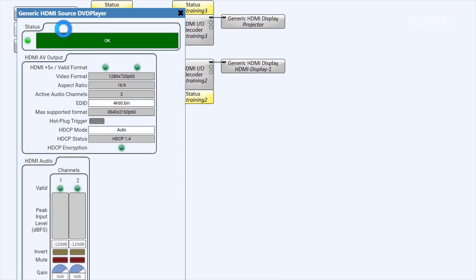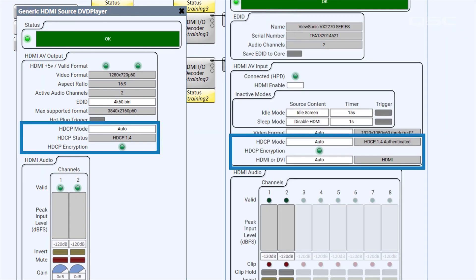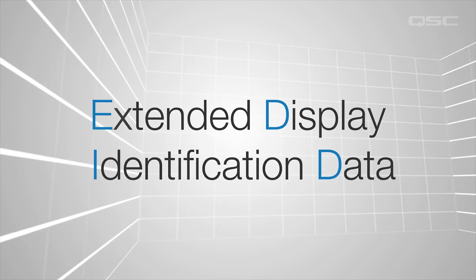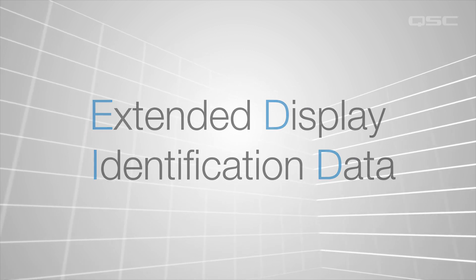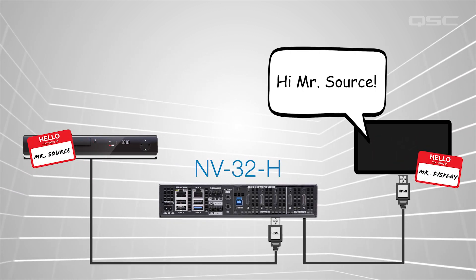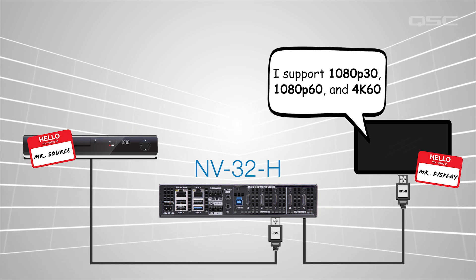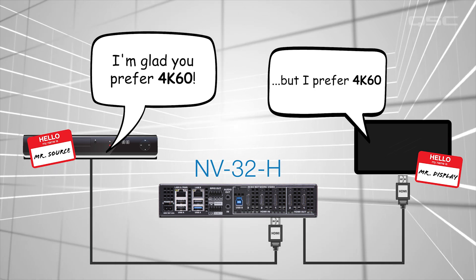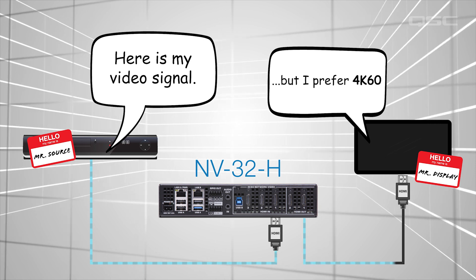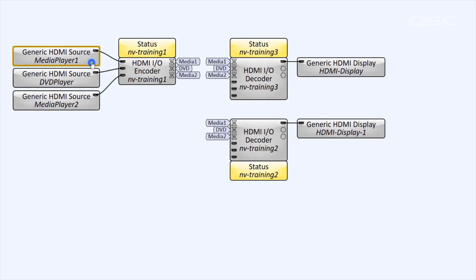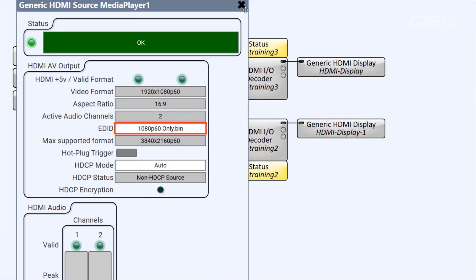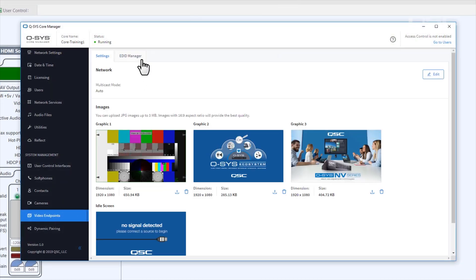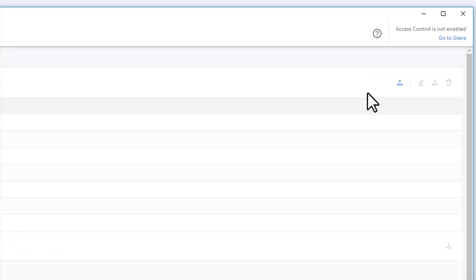There are a few places in the software where you'll want to investigate the HDCP status of your device, which can be important when you're troubleshooting. EDID stands for Extended Display Identification Data, which is another handshaking process between devices that lets a video source know which formats are available, unavailable, or preferred by a particular video display. The EDID tells the source device which resolution and frame rate settings are optimal for the display. You'll see a number of places in the software where you can see the results of this EDID handshake and select from available video sources. You can even copy a display's EDID to your core manager and apply it directly to a source, ensuring that the right format will be used.